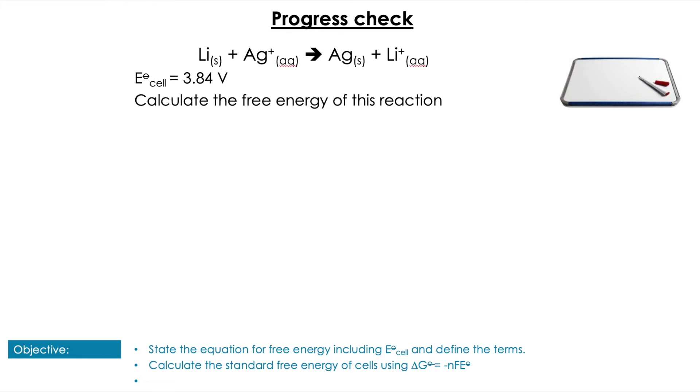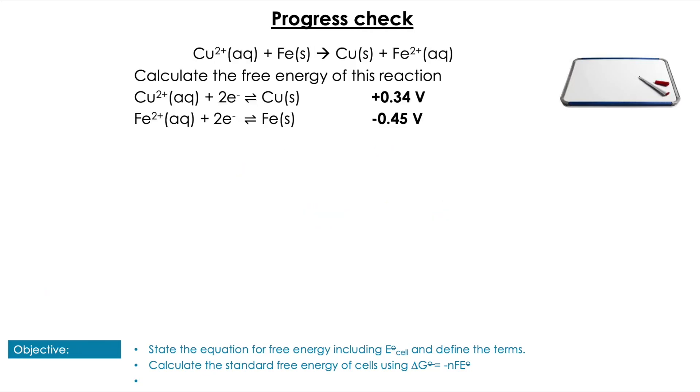Using the same equation as before, we can see that we only have one mole of electrons being transferred here, multiplied by Faraday's constant which is always the same, multiplied by the E°cell. For this one we get -370,560 joules, which is of course -370.56 kilojoules. For the next question, I want you to calculate the free energy of this reaction, but you're not given the E°cell value directly. Pause the video here.